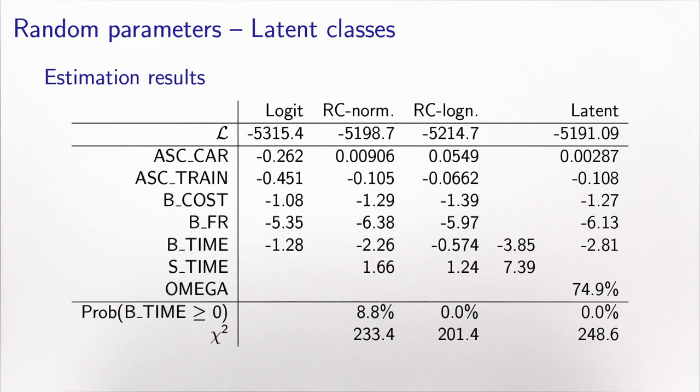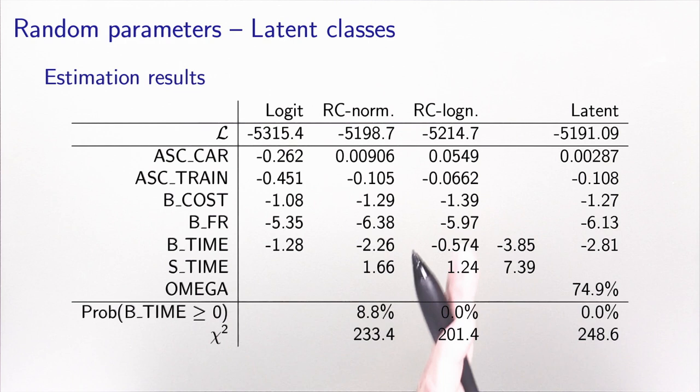In this slide, I have recycled the results from the previous video, where we estimated a logit model, a random coefficient model with a normal distribution that we rejected, and a random coefficient model with a log-normal distribution. The log-normal gave us the idea that maybe some people in the population didn't play the game correctly and were associated with a zero beta time — and this was the motivation to develop the latent class model.